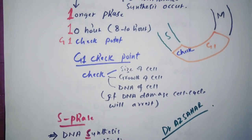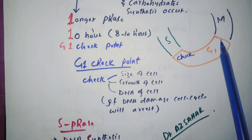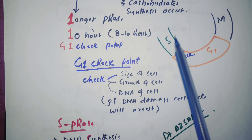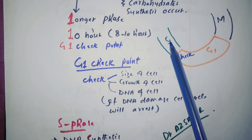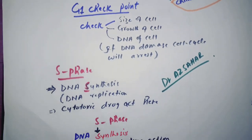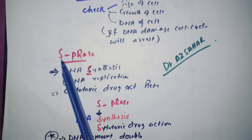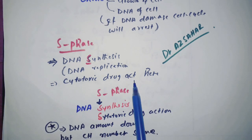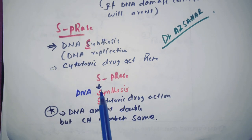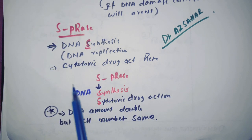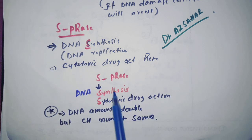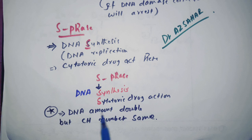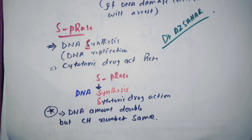G1 phase is present between M phase and S phase. For S phase, there will be DNA synthesis — 'S' means synthesis — which can also be called DNA replication. Cytotoxic drugs act here. To remember: 'S' for DNA synthesis or replication; cytotoxic drugs act here due to replication of DNA. The amount of DNA will double so it can be distributed to each daughter cell, but the chromosome number remains the same — only the DNA amount doubles.